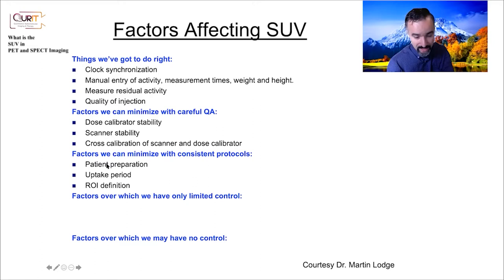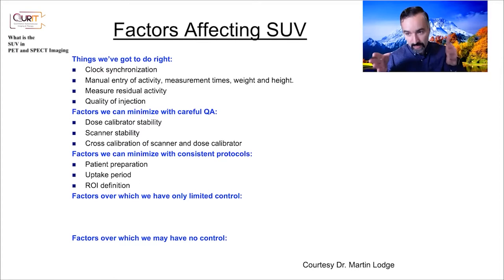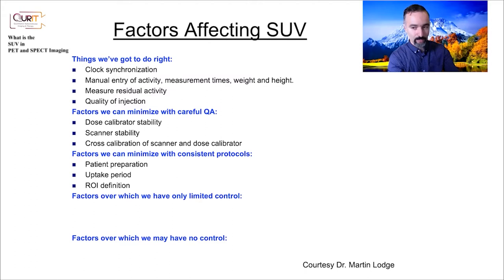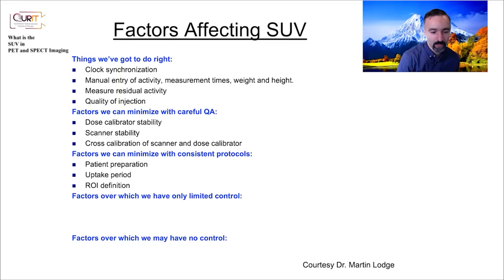Things we can minimize with consistent protocols: patient preparation — making sure patients have followed proper protocols, for example proper fasting when doing an FDG scan, and having consistent uptake periods. If the time between injection and scan is 60 minutes, try to keep it consistently at 60 minutes. Otherwise, if before therapy a patient waited 60 minutes but after therapy they waited 90 minutes, they will get relatively higher SUV values. You might think the tumor is getting worse just from looking at the numbers, but that's because they waited more — there was more time for uptake. Also important: definition of regions of interest.